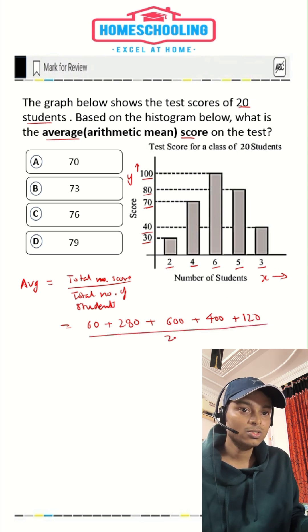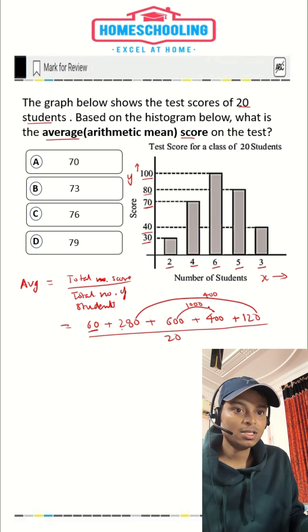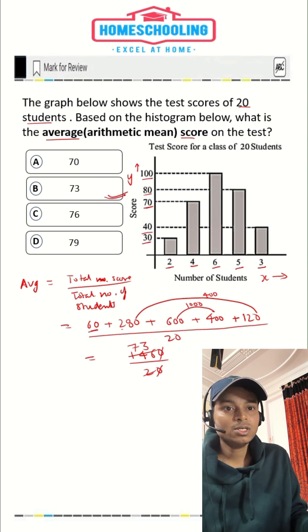So total number of students is 20. Now if we add these, 600 plus 400, this one would be 1000. And if we add these two, 280 plus 120, this one would be 400, plus 60. So 1000 plus 400 would be 1400 plus 60. So 1460 divided by 20. 0 and 0 will get cancelled. So 2, 7 times 14, and 2 times 3, that is 6. So option B is your correct answer.